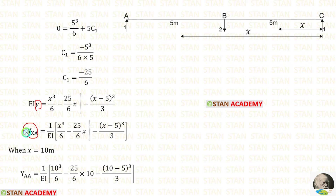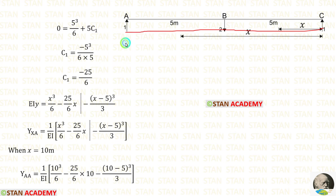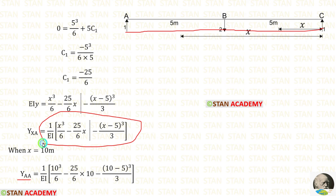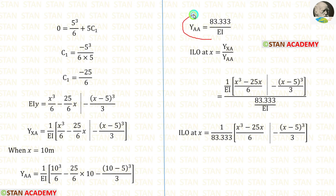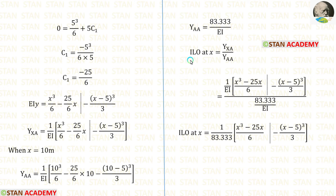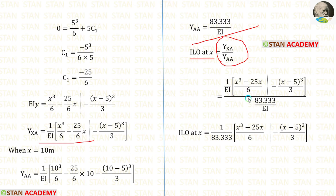This deflection is YXA because we calculated the deflection at distance x. When x equals 10 meters, we get YAA. Applying x=10 in the equation, we get YAA equal to 83.33/EI. We already saw the formula: influence line ordinate at x equals YXA divided by YAA. We can apply the values, eliminate EI, and finally we get the formula.